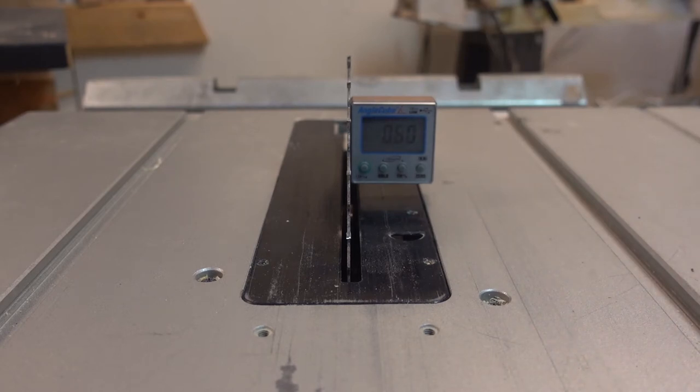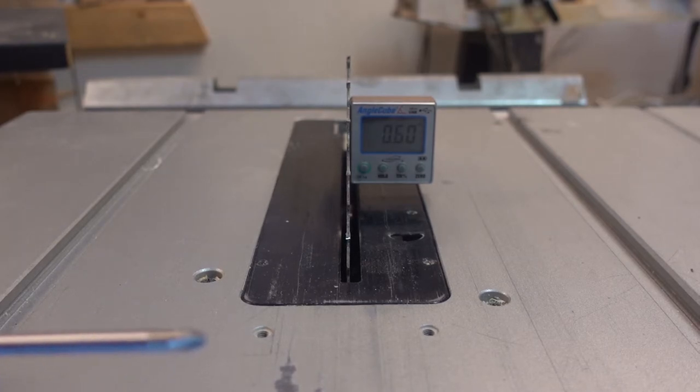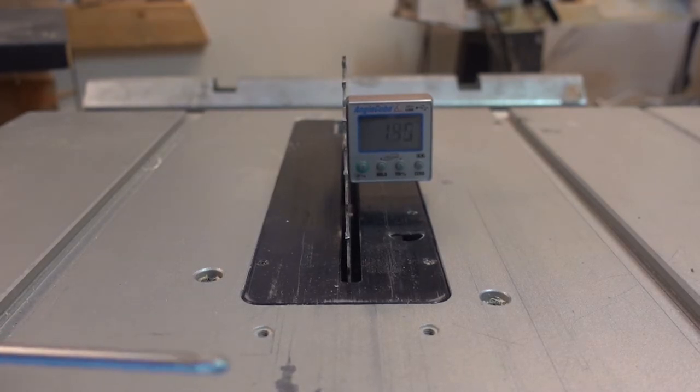I put the cube on the blade. The cube has magnets on its sides so it sticks pretty good to the blade. As you can see my saw blade is 0.6 degrees off.